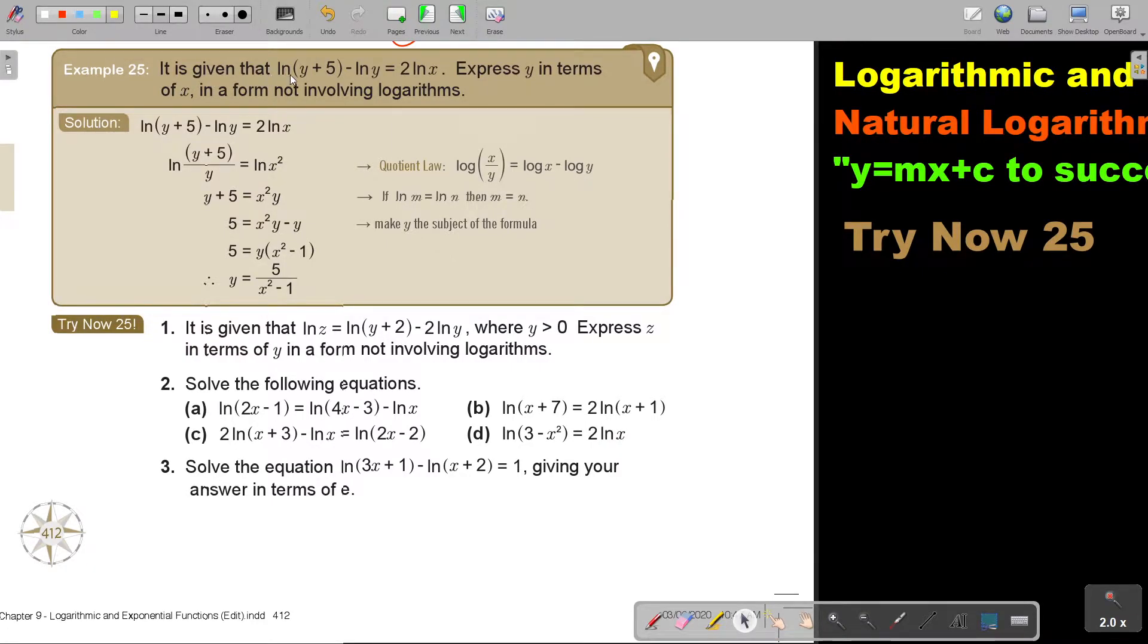It is given that ln(y+5) minus ln y equals 2 ln x. Express y in terms of x in a form not involving logarithms. So get rid of the logarithms.